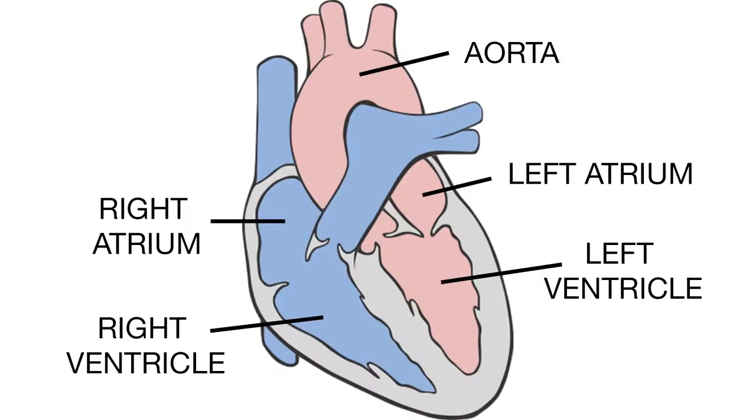The four chambers include the right atrium, right ventricle, left atrium, and left ventricle. The cardiac conduction system is a group of specialized muscle cells and conducting fibers that initiate the normal cardiac cycle and cause the heart to contract.